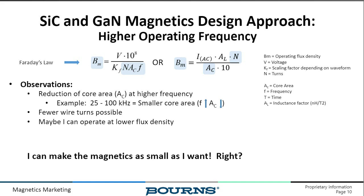Q: Why is altitude a requirement? A: At higher altitudes — say 5,000 or 10,000 meters — thinner air reduces what's called the CTI (Comparative Tracking Index) of any material used. At higher and higher altitudes, the CTI rating drops, meaning electricity has a greater tendency to track along surfaces. This is why different altitude requirements exist for avionics and space flight applications. From a magnetics construction perspective, it's the CTI rating of the bobbin and winding materials that's the concern.